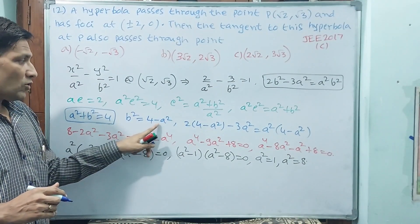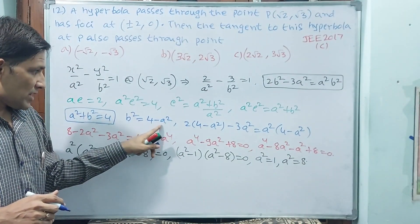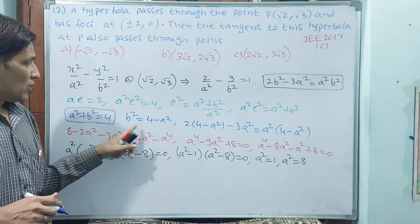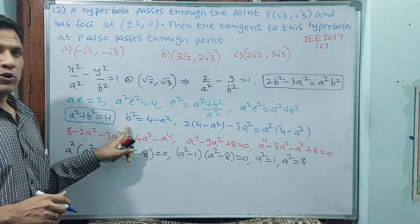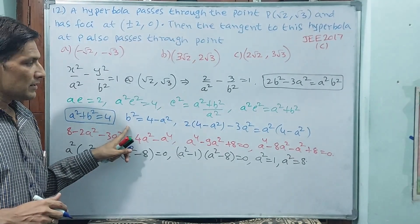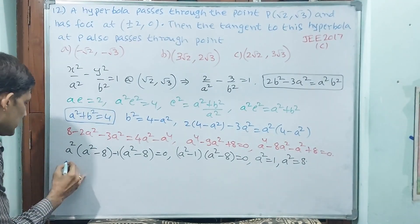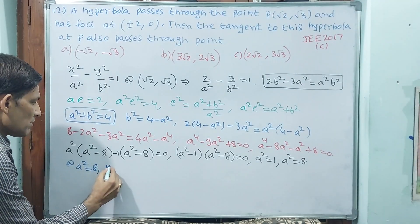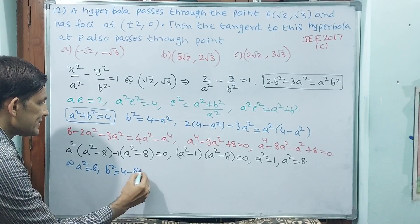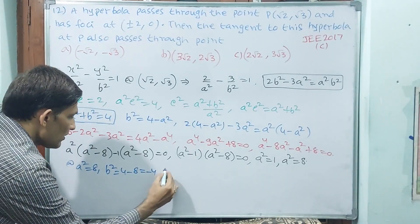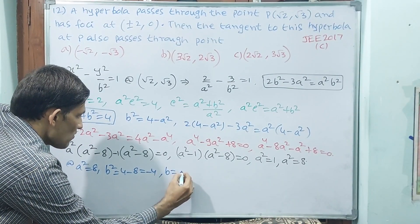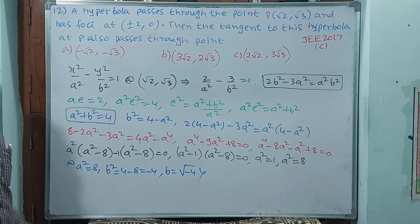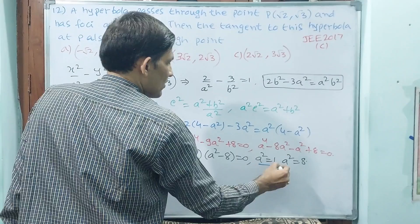But wait — if a squared equals 8, then b squared equals 4 minus 8 equals minus 4, and b equals square root of minus 4, which is not valid. It becomes a complex number. So we reject a squared equals 8.